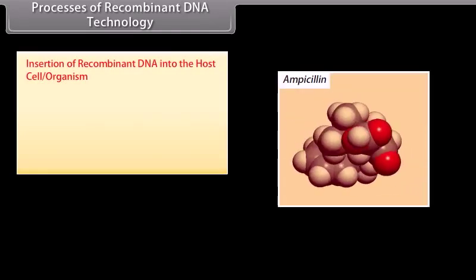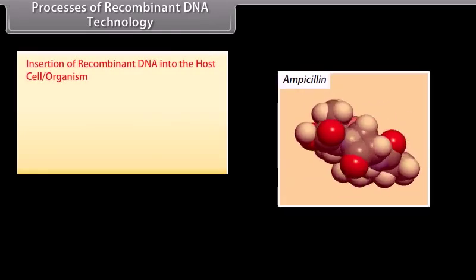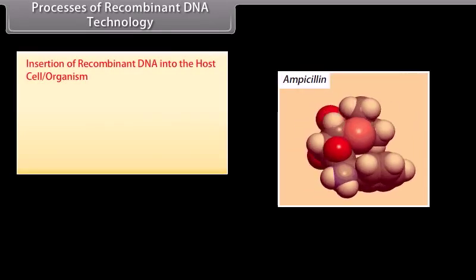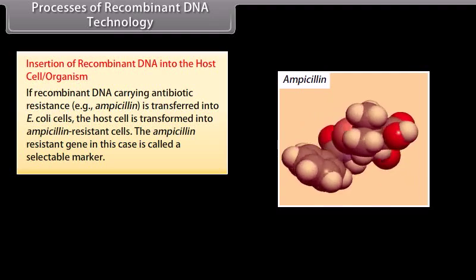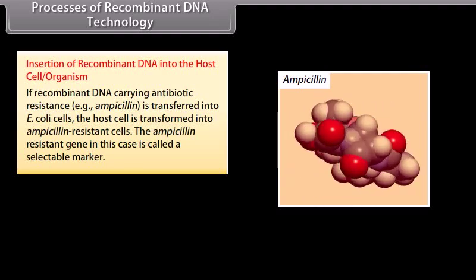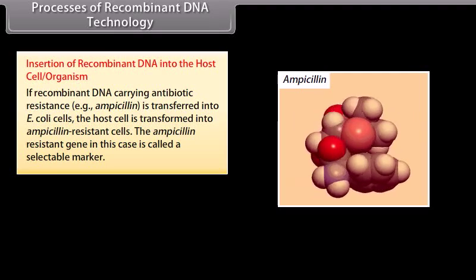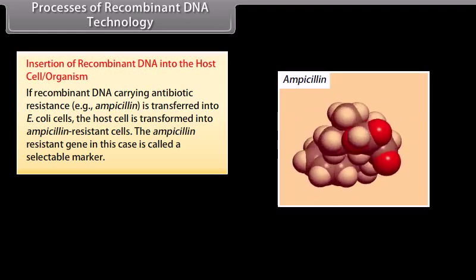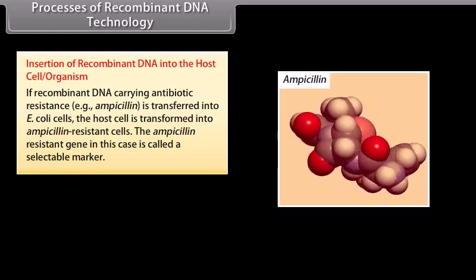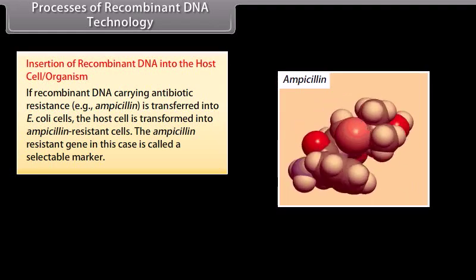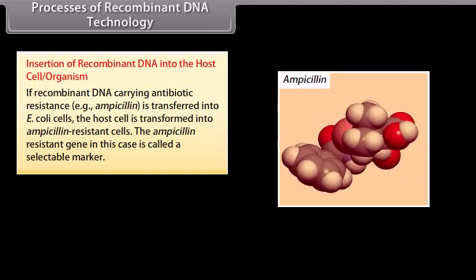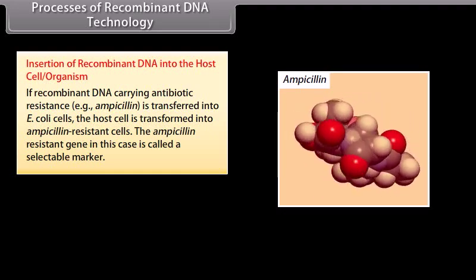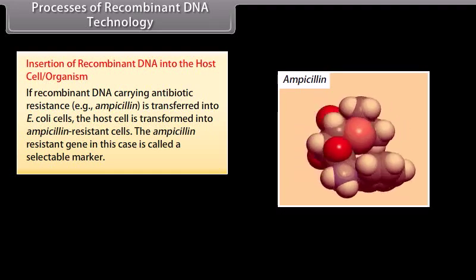Insertion of recombinant DNA into the host cell organism. If recombinant DNA carrying antibiotic resistance — that is, ampicillin resistance — is transferred into E. coli cells, the host cell is transformed into ampicillin-resistant cells. The ampicillin resistance gene in this case is called a selectable marker.